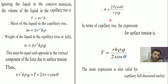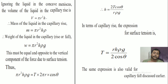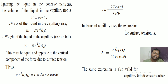Setting the weight equal to the vertical surface tension force: π·r²·h·ρ·g equals T·2πr·cos theta. Simplifying, h equals 2T·cos theta upon r·ρ·g. This is the same expression derived using the pressure difference method, and the same formula is also valid for capillary fall.